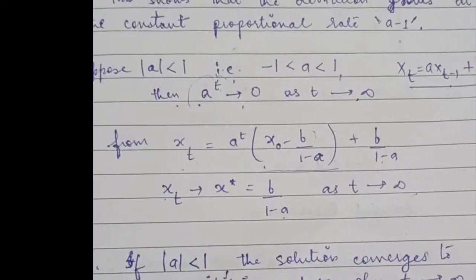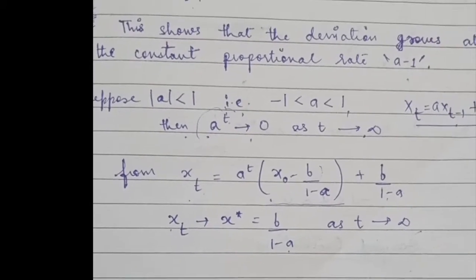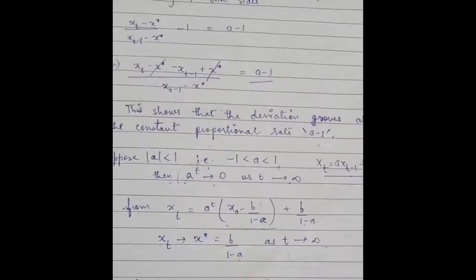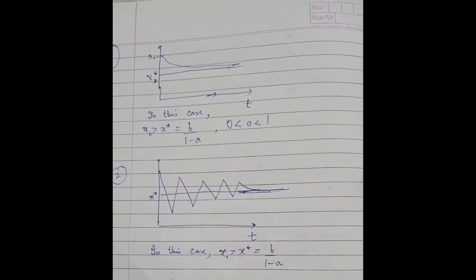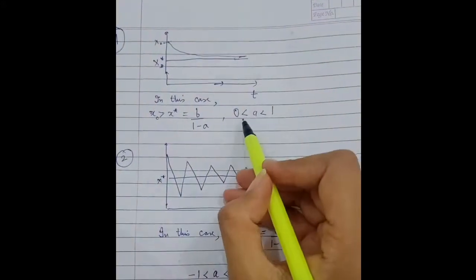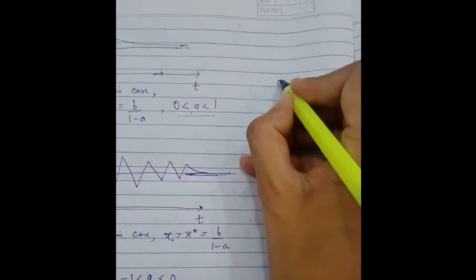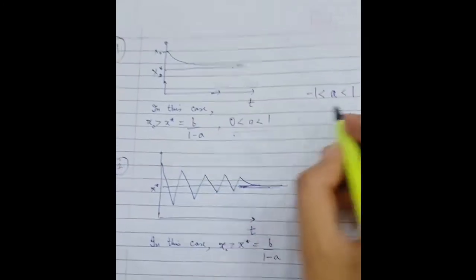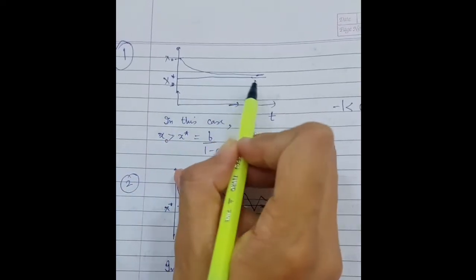In other words, we can say that if the mod value of a is less than 1, then the solution converges to its equilibrium state when t tends to infinity, and in this situation the equation is called a stable equation. These two graphs show two different possibilities for the case when a is less than 1. The first possibility is that a is between 0 and 1.